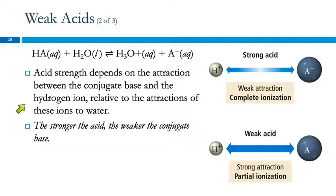So acid strength depends on the attraction between the conjugate base and the hydrogen ion relative to the attractions of these ions to water. So the stronger the acid, the weaker the conjugate base.